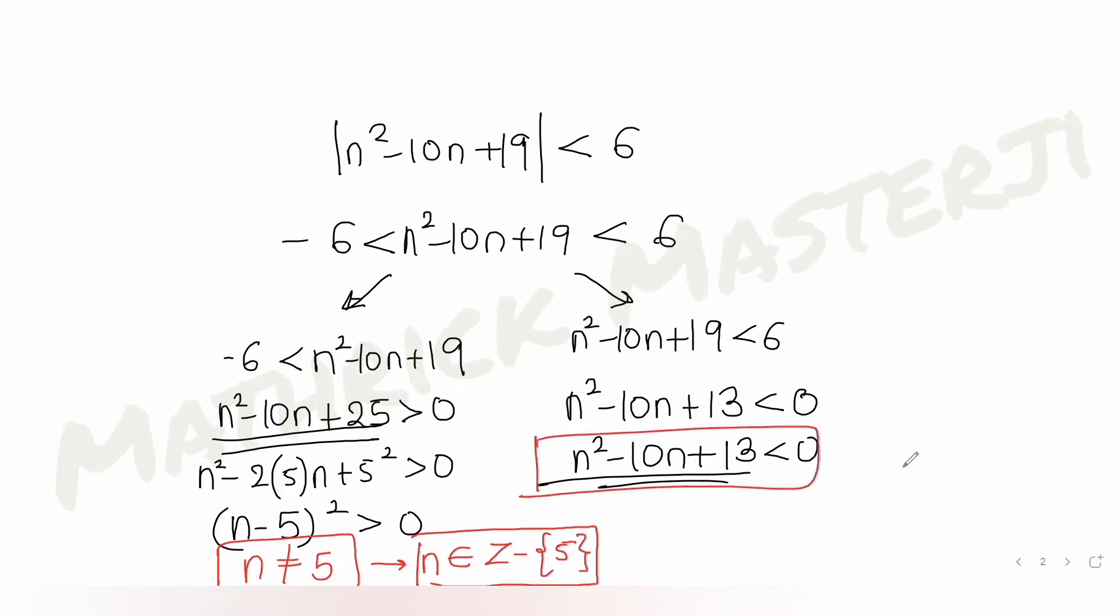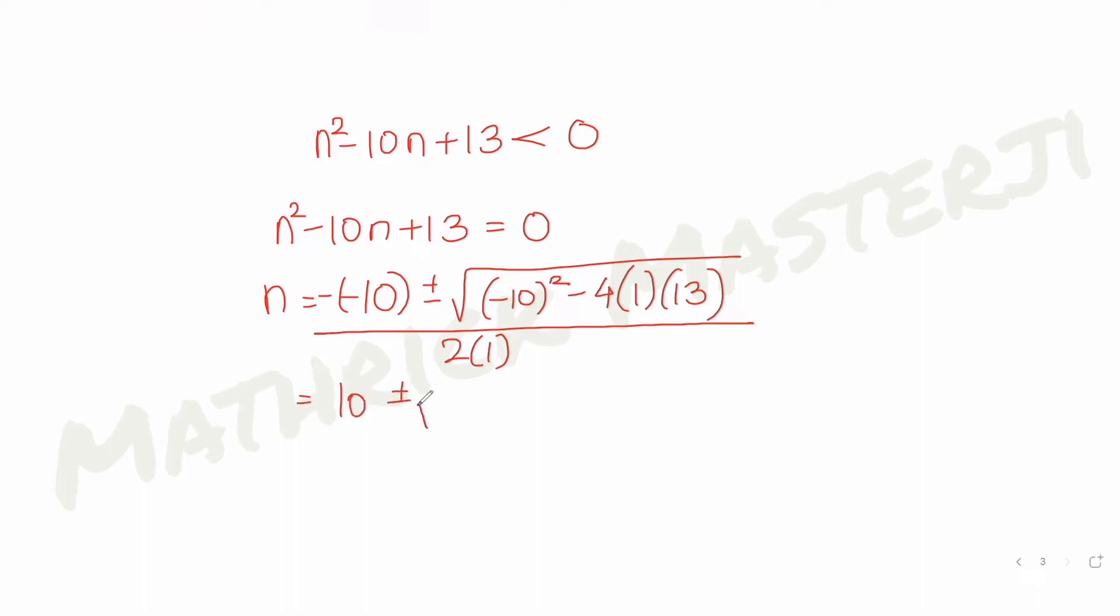Let's solve for this expression. We have been told that n square minus 10n plus 13 should be less than 0. Let's put it equal to 0 and solve this expression. If I solve it using formula method, n becomes minus b. So minus of minus 10 plus minus root of b square minus 4ac. A is 1, C is 13, so that gives me 10 plus minus root 48 over 2.